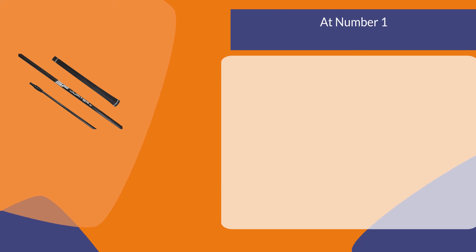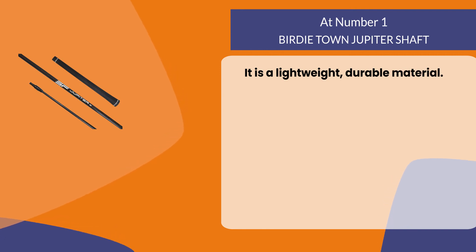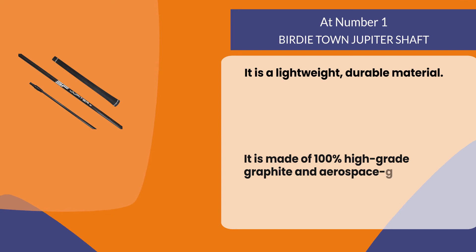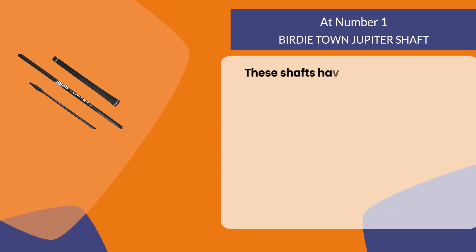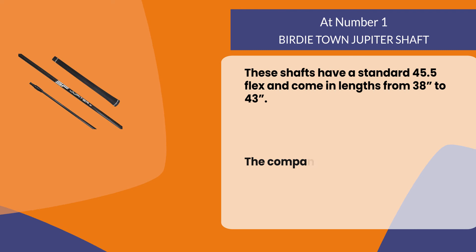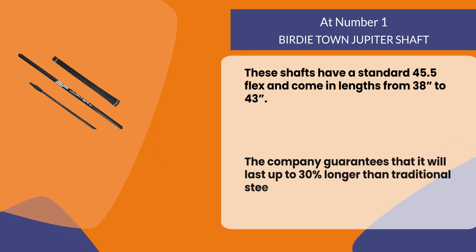At number one, Birdie Town Jupiter Shaft. It is a lightweight, durable material made of 100% high-grade graphite and aerospace-grade epoxy. These shafts have a standard 45.5 flex and come in lengths from 38 to 43 inches. The company guarantees that it will last up to 30% longer than traditional steel shafts.